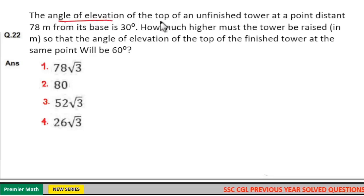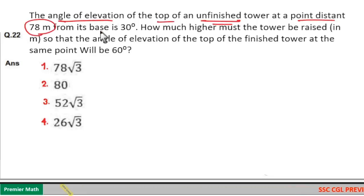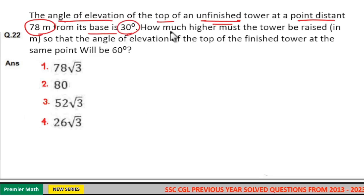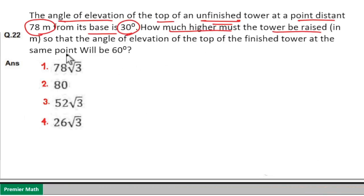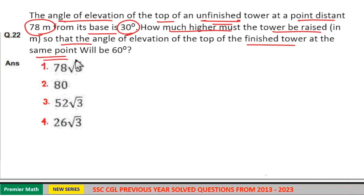The angle of elevation of the top of an unfinished tower at a point 78 meters from its base is 30 degrees. How much higher must the tower be raised so that the angle of elevation of the top of the finished tower at the same point will be 60 degrees?